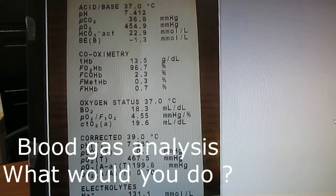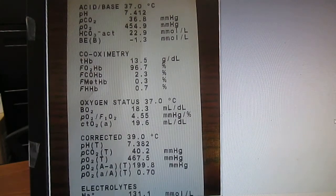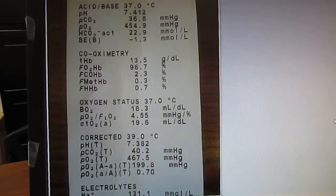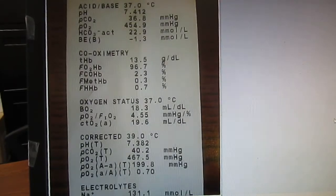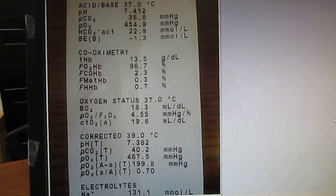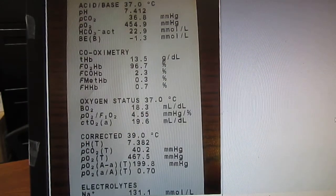You have your blood gas from your machine. Let's look at this: pH, PCO2, PO2, bicarb, base excess. At the very top it says 37 degrees Celsius. That's the temperature for this blood gas. It is not temp corrected. We will not look at that today. We will look at 37 degrees only.